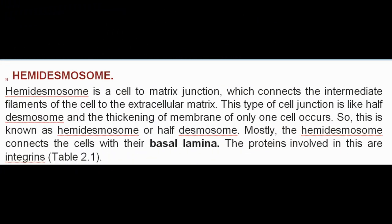Hemidesmosome: A hemidesmosome is a cell-to-matrix junction which connects the intermediate filaments of the cell to the extracellular matrix. This type of junction is like half a desmosome, and thickening of the membrane occurs in only one cell — hence it is known as hemidesmosome or half-desmosome. Mostly, the hemidesmosome connects the cells with their basal lamina. The proteins involved in this are integrins.